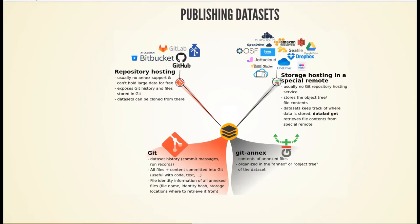Repository hosting services provide a publicly available GitHub repository where you can find a clone link — very convenient for exposing datasets and for others to find and consume them. Storage hosting services, on the other hand, do not have Git support — they are simply there to hold digital blobs of data. Typically, the annexed content lives on a storage hosting place and the Git part lives on the repository hosting place.